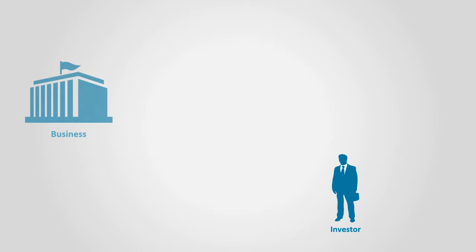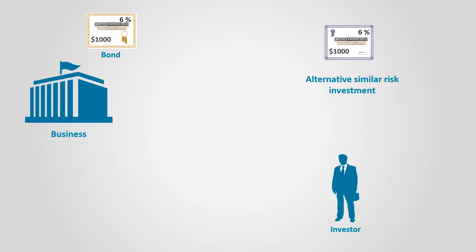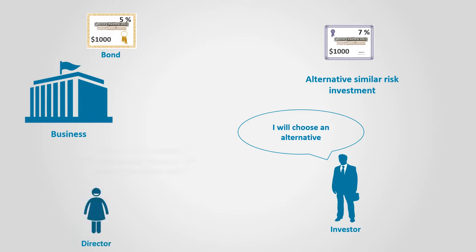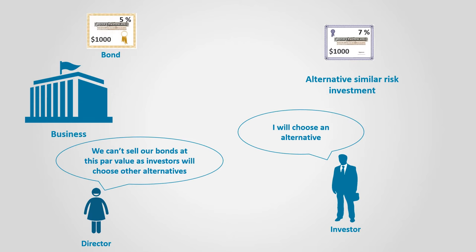Bond discounts. If an investor is choosing between two alternatives of similar risk, both yielding 6% interest, the investor would not be better off by choosing one over the other. However, if the bond alternative is offering 5% while the similar risk alternative yields 7%, a rational investor would choose the alternative with the higher rate of return, which is 7%. The business cannot sell the bond at its face value in such a scenario — it would be able to sell it if it offered it at a discount.